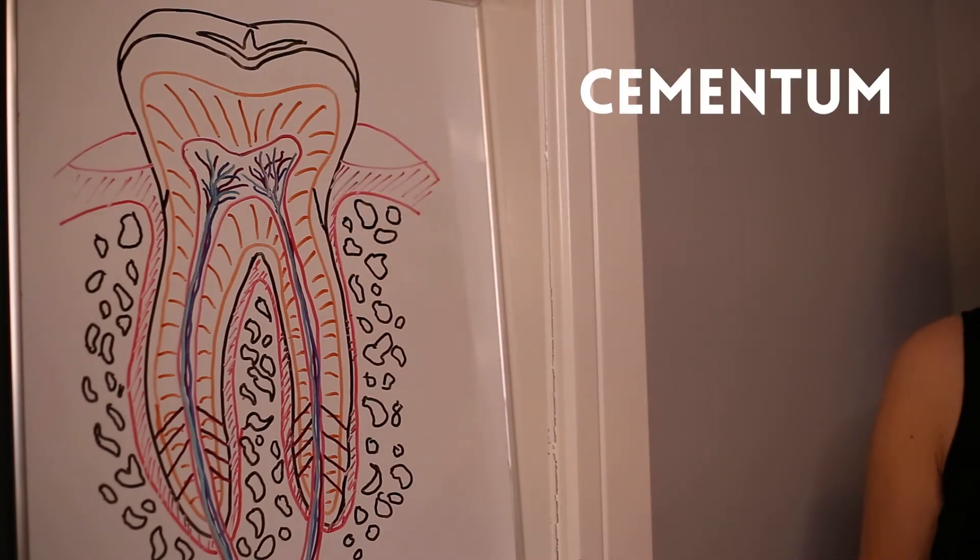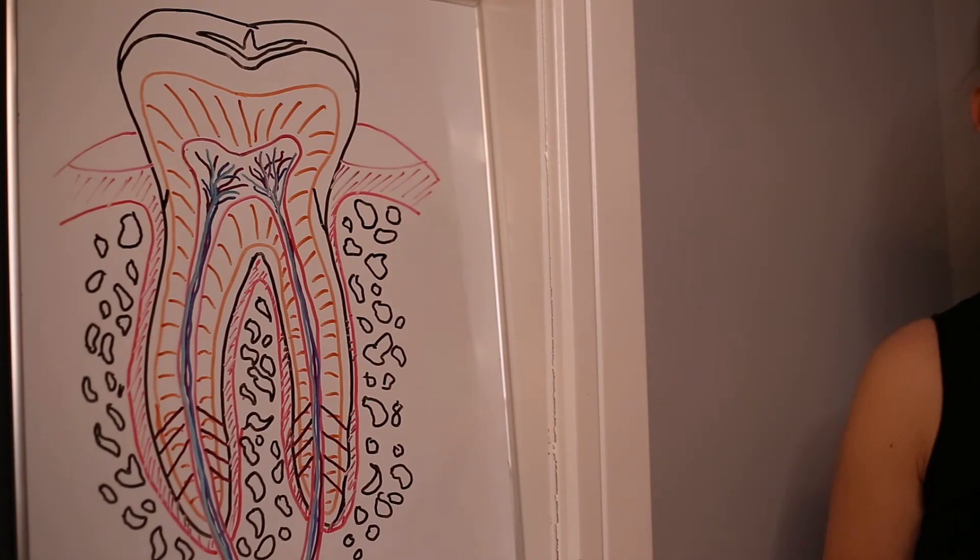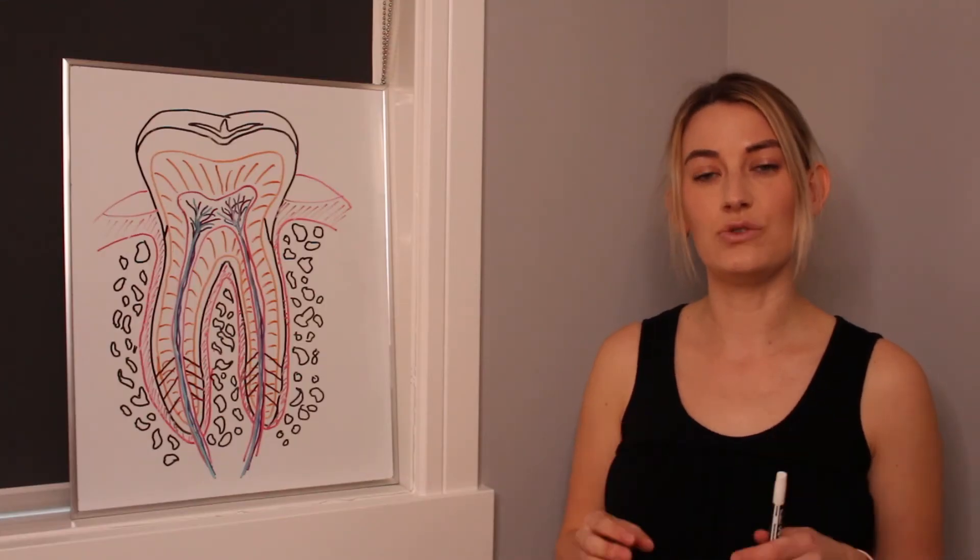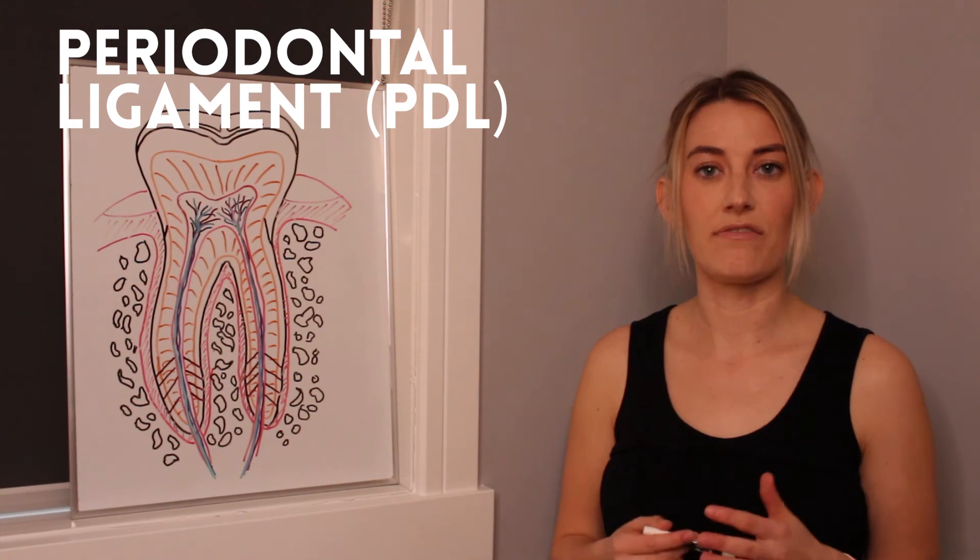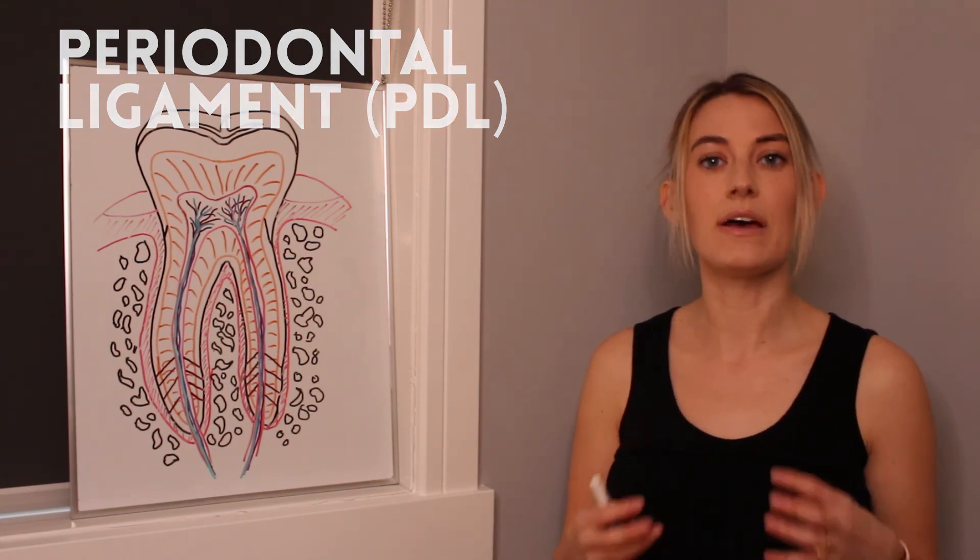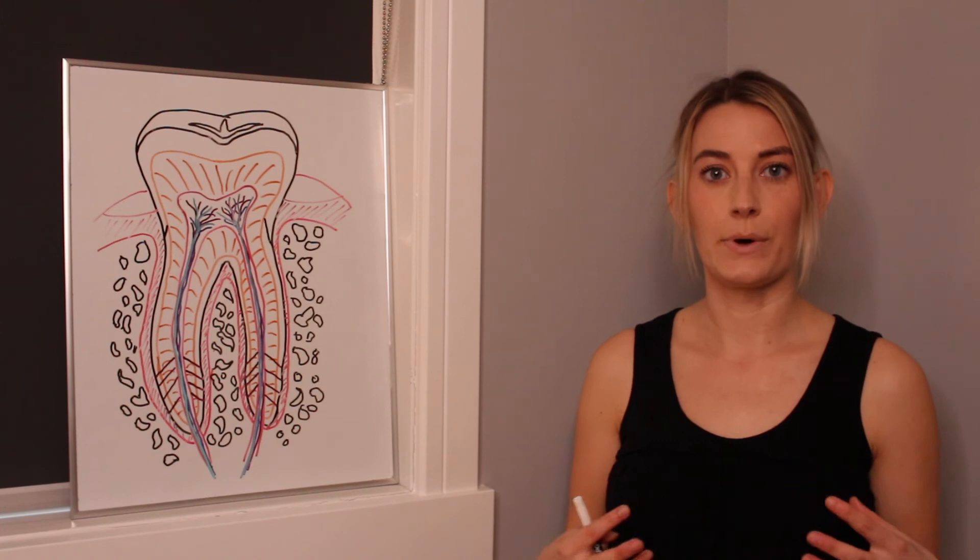Now the cementum is basically kind of like the enamel except for it's a little bit softer of a material and the main point of this is for anchorage of the tooth into the bone itself. So it has these little ligaments called PDL or periodontal ligament fibers that run into the cementum and they help to anchor the tooth into the surrounding bone.